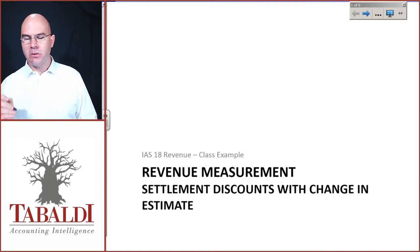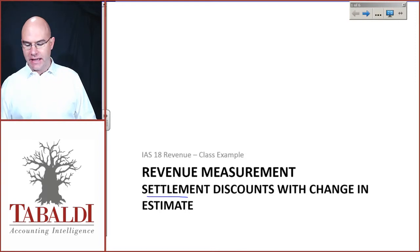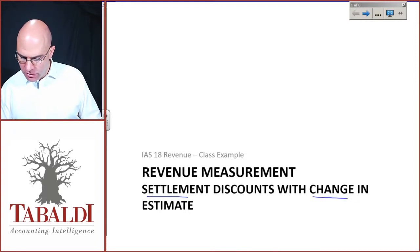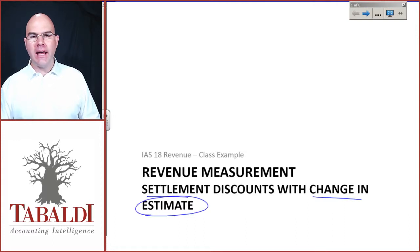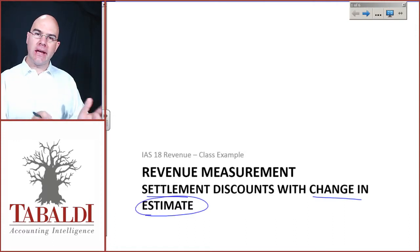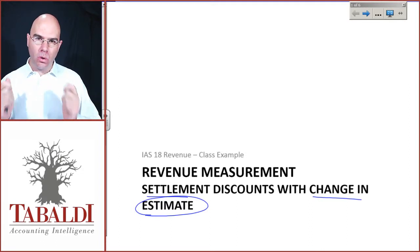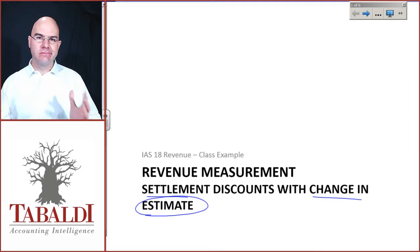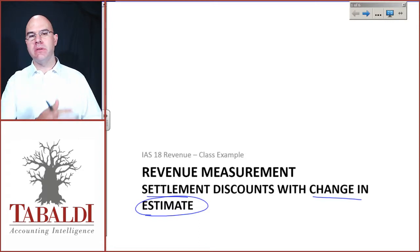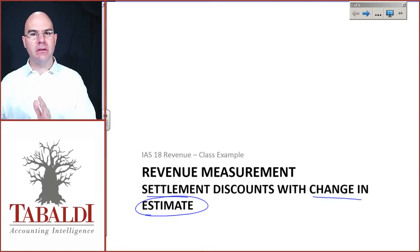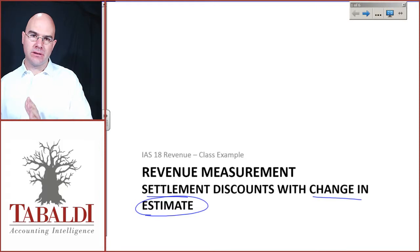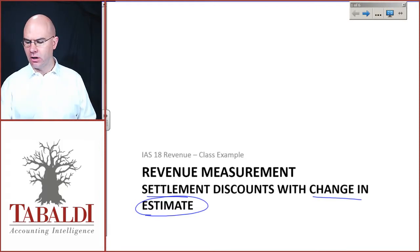Welcome back. We are continuing with our discount class examples. Again, a settlement discount, but this time we are going to add a little twist — we are going to do a change in estimate. We estimate that on day one, 60% or 50% of the debtors will qualify for this settlement discount, but then within 30 days the figures are different compared to what the original estimate was. This example will help with that.